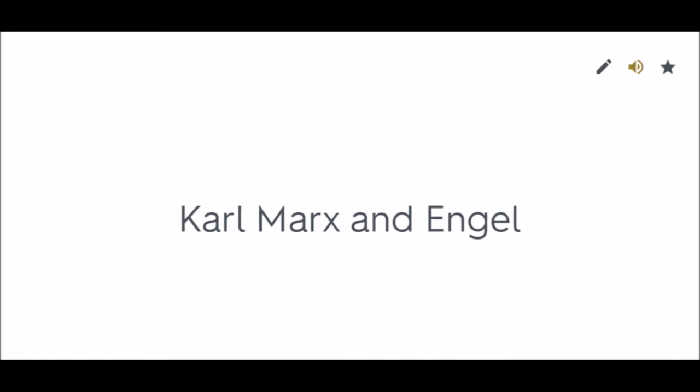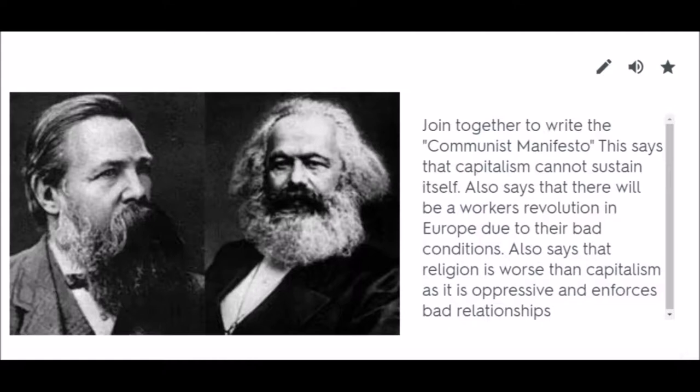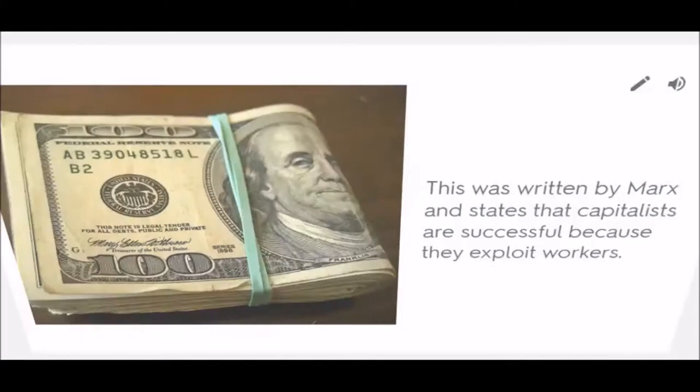Karl Marx and Engels joined together to write the Communist Manifesto, which says that capitalism cannot sustain itself. It also says there will be a workers' revolution in Europe due to bad conditions, and that religion is worse than capitalism as it is oppressive and enforces bad relationships. Theory of Surplus Labor: Written by Marx, it states that capitalists are successful because they exploit workers.